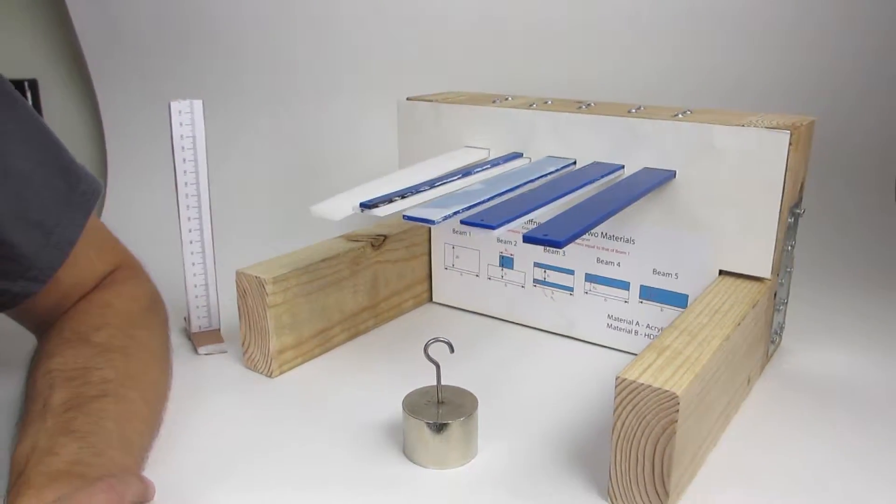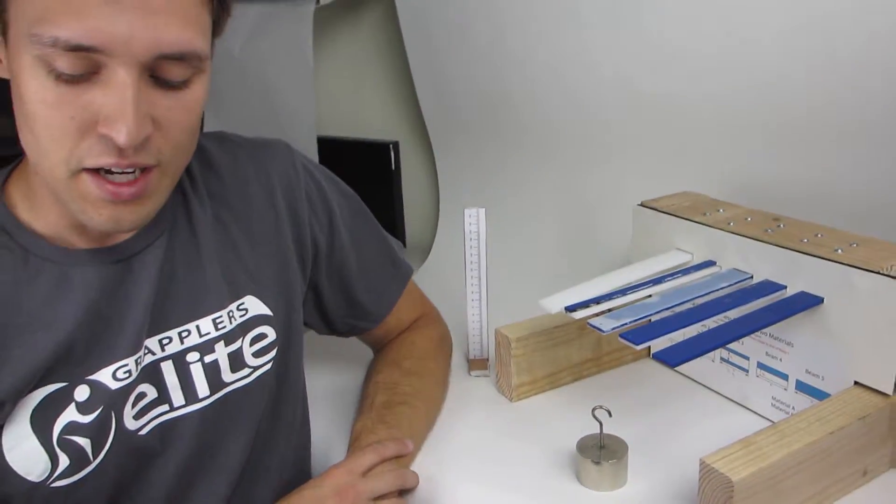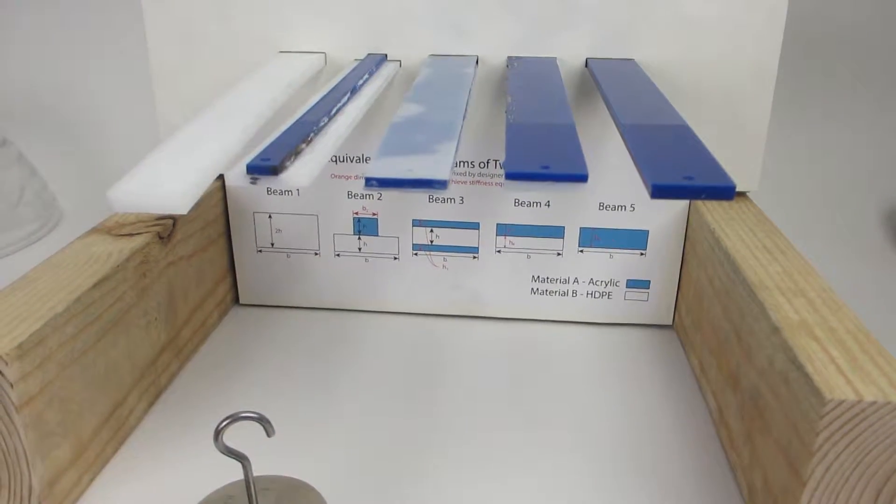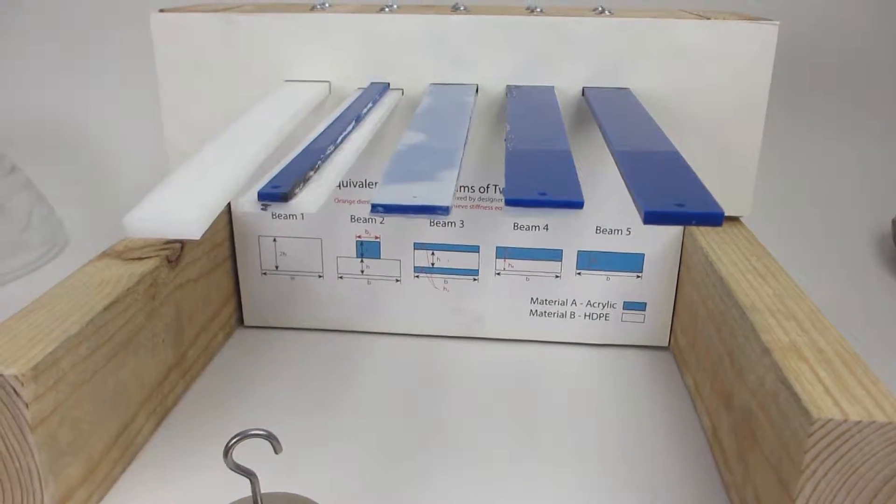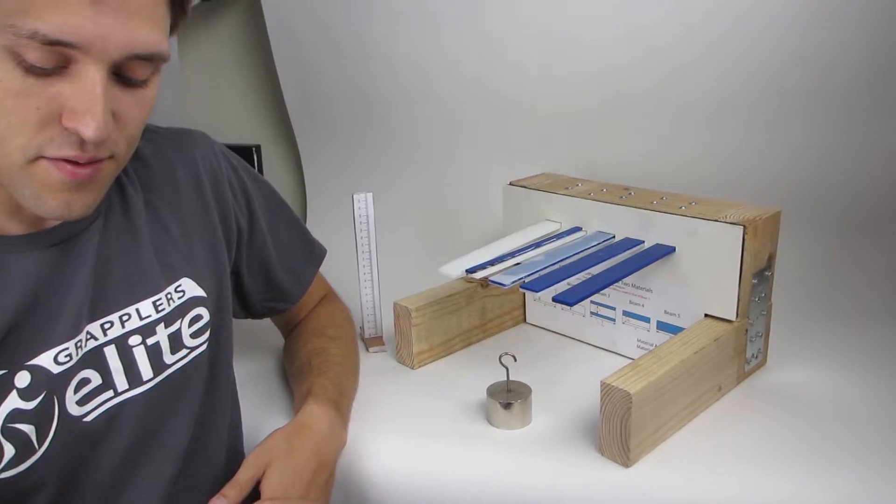So you can see these beams are all made of different combinations of two materials. And the reason we chose this project is we wanted to show how by changing geometry of material you can make beams that are composites of different materials that have approximately the same stiffness.